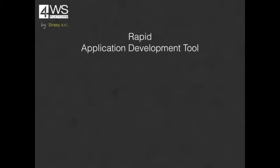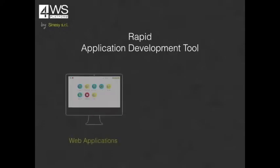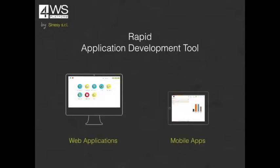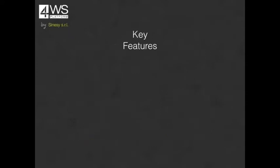4WS Platform is a low-code development tool used to quickly create multichannel applications, including web and mobile applications for iOS and Android mobile platforms.